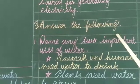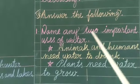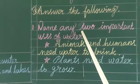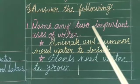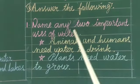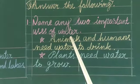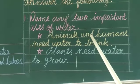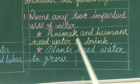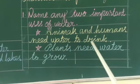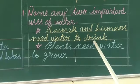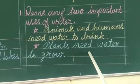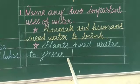Answer the following. First question: Name any two important uses of water. Animals and humans need water to drink. Plants need water to grow.